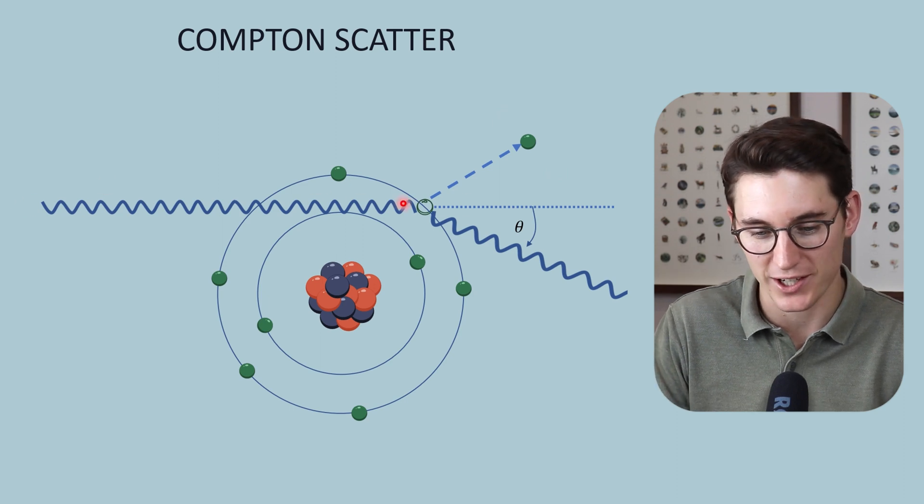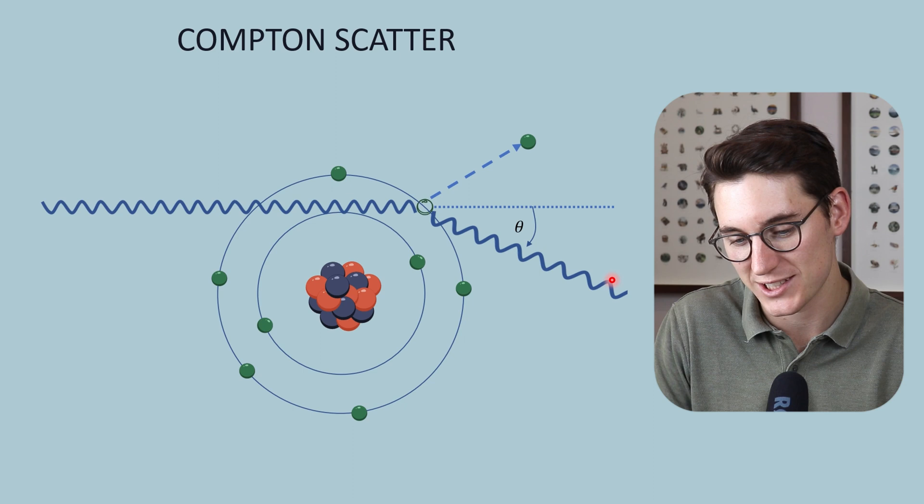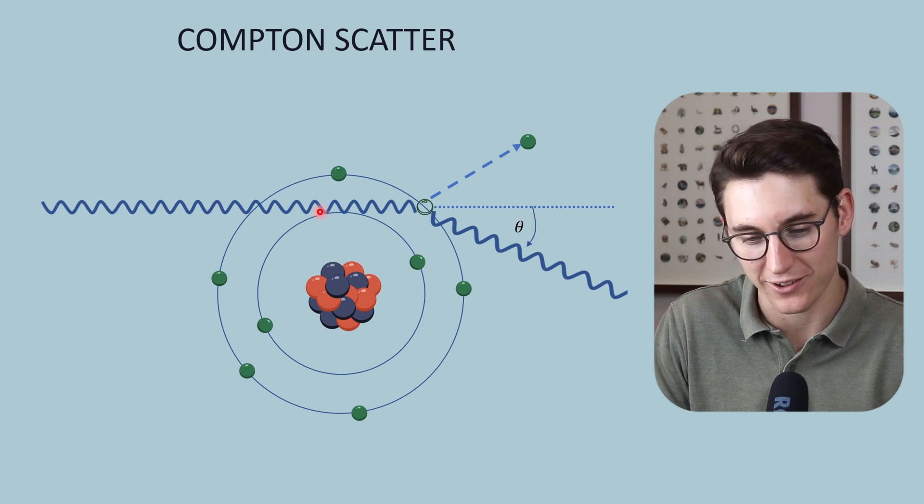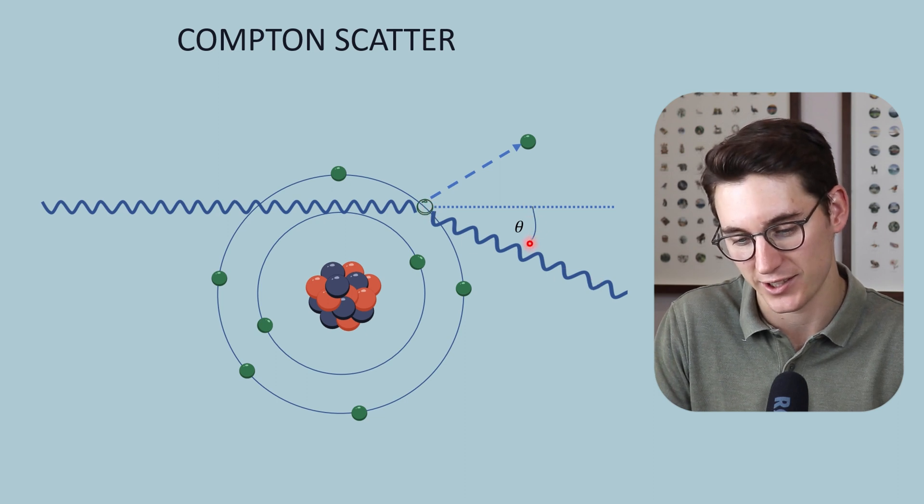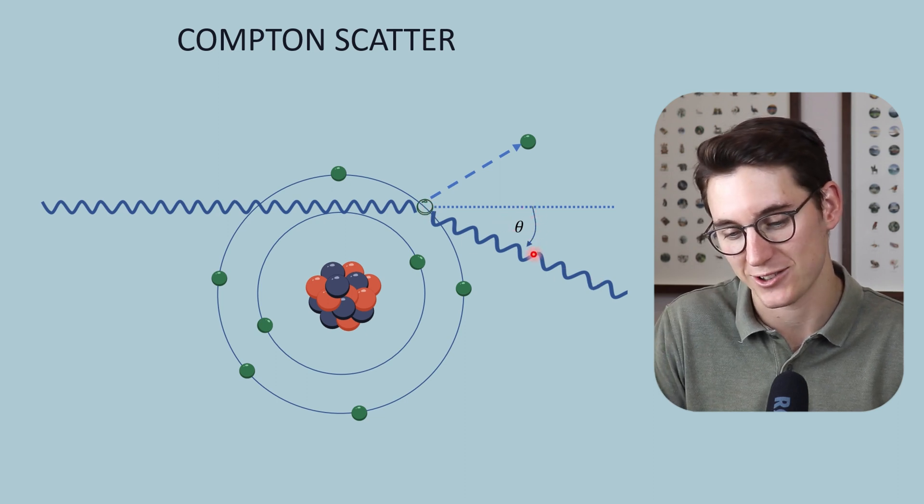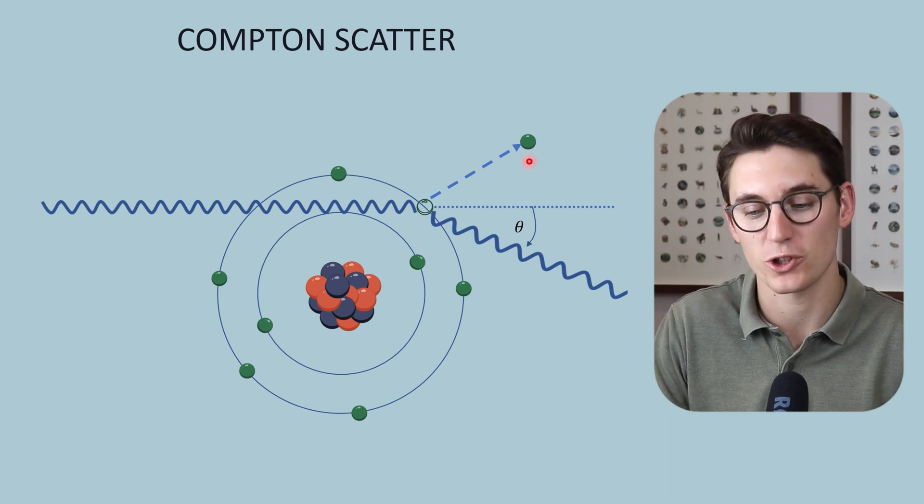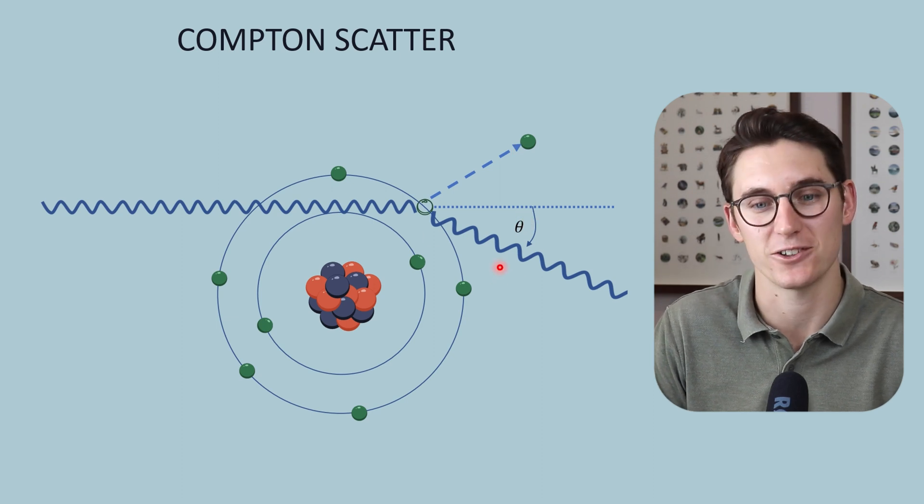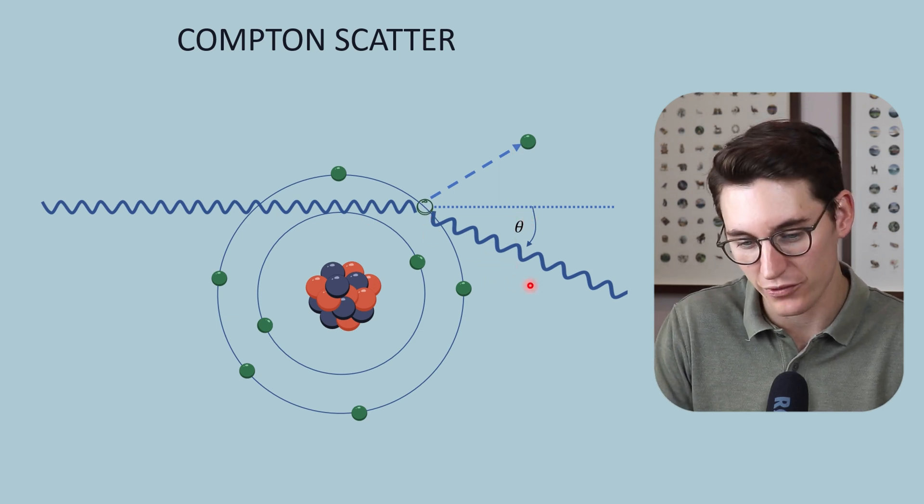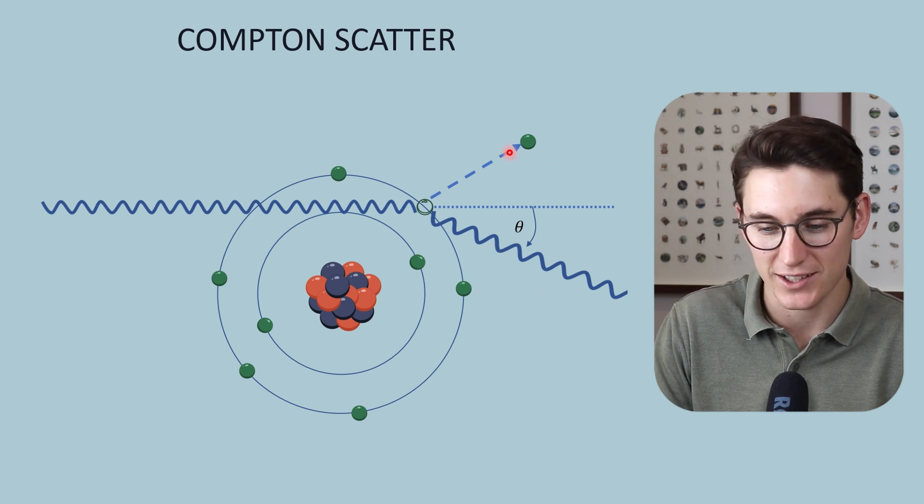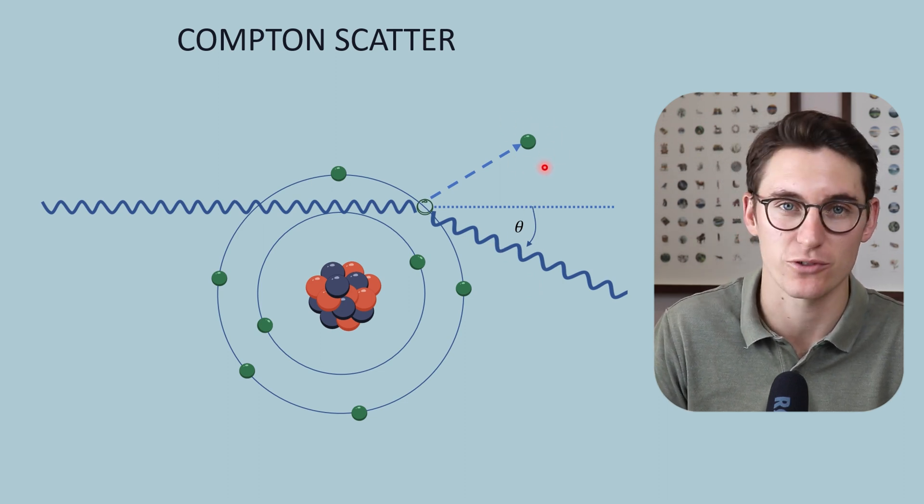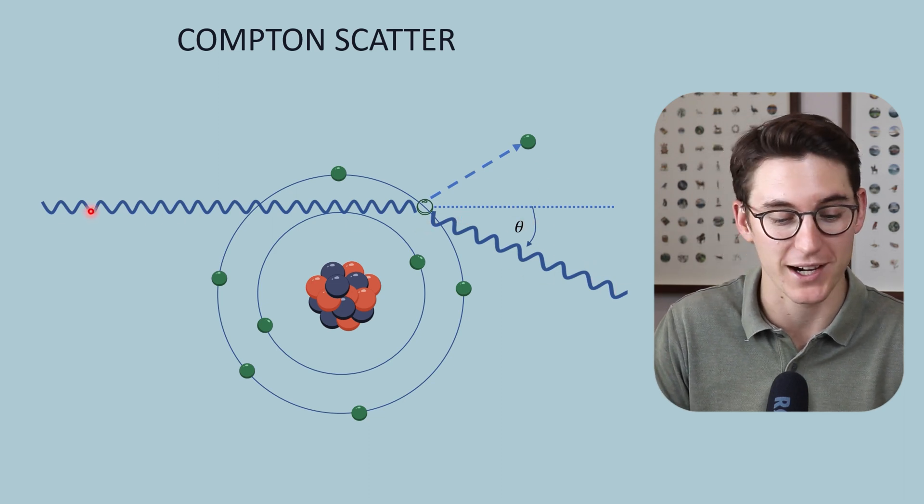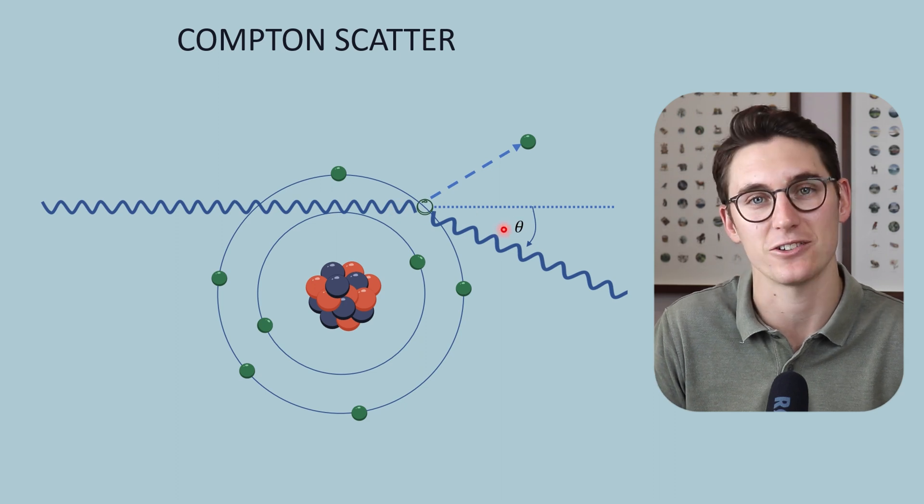The x-ray that collided with the outer shell electron will scatter at an angle known as the scatter angle—the angle between our incident x-ray and our scattered x-ray. Theta represents our scatter angle. This photoelectron will have an energy proportional to the scatter angle. The larger the scatter angle of this Compton scattered x-ray, the more energy this photoelectron has. The energy of Compton scatter is determined by the incident energy and the scatter angle.